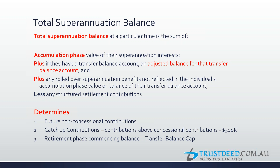There are bring-forward rules depending on whether your balance is 1.4 million or 1.5 million in prior years, affecting whether you can bring forward two years or only one year of non-concessional contributions. The cap for non-concessional contributions is limited by the gap between the 1.6 million balance transfer cap and your total superannuation balance. For example, if your total superannuation balance is 1.55 million, you can only contribute 50,000, not the full 100,000 annual non-concessional cap.